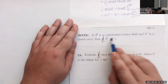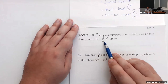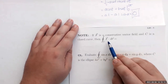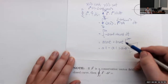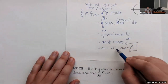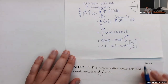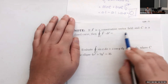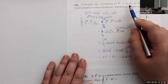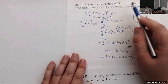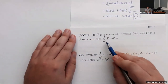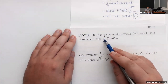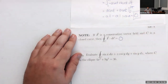If f is a conservative vector field and c is a closed curve, then no matter what type of conservative vector field it is, if you do an integral around a closed curve you're going to end up getting zero. All constant vector fields are conservative — that's a result we've seen previously — and this is a pretty nice result overall.